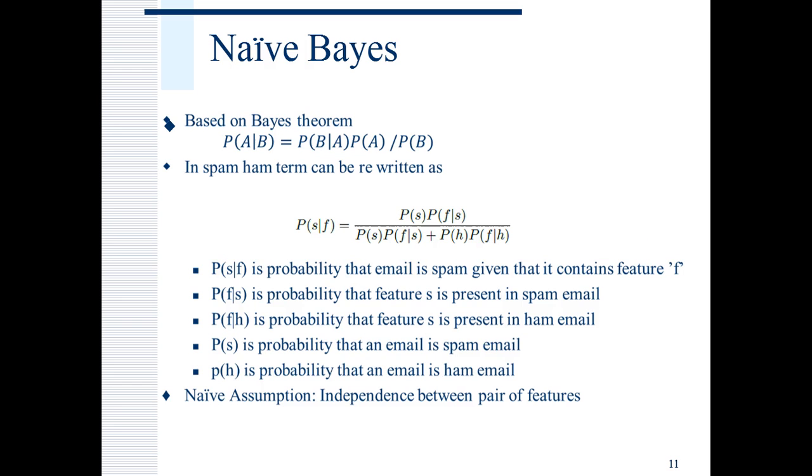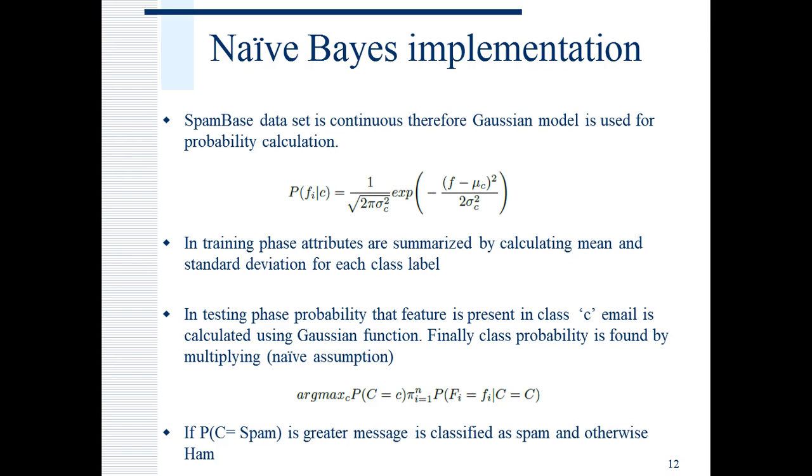Let us now discuss the implementation. Naive Bayes is the first algorithm that I have implemented. It belongs to a family of probabilistic classifiers that are based on Bayes' theorem as shown in the equation. The naive assumption assumed here is that pair of features are independent and don't affect each other. Spam base dataset is continuous and in this project, it is assumed that it follows Gaussian distribution. To calculate probability distribution of feature given a class, Gaussian distribution function is used.